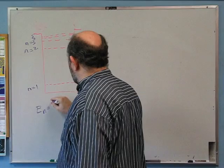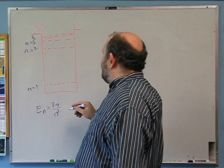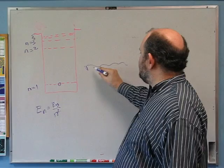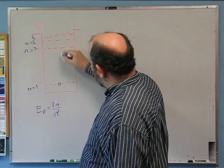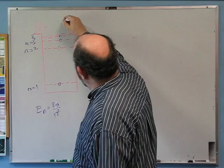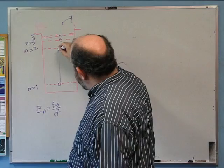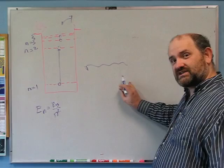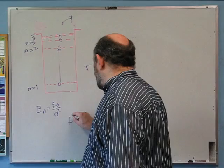The energy of the nth state is equal to the Rydberg divided by n squared. So if you have an electron sitting in the ground state — that's hydrogen in the ground state, meaning the electron's in the 1s orbital — if a photon comes in with just the right amount of energy, it'll get absorbed by the hydrogen. It could jump to n=2, n=3, n=4, or if there's plenty of energy, it could actually kick the electron out altogether.